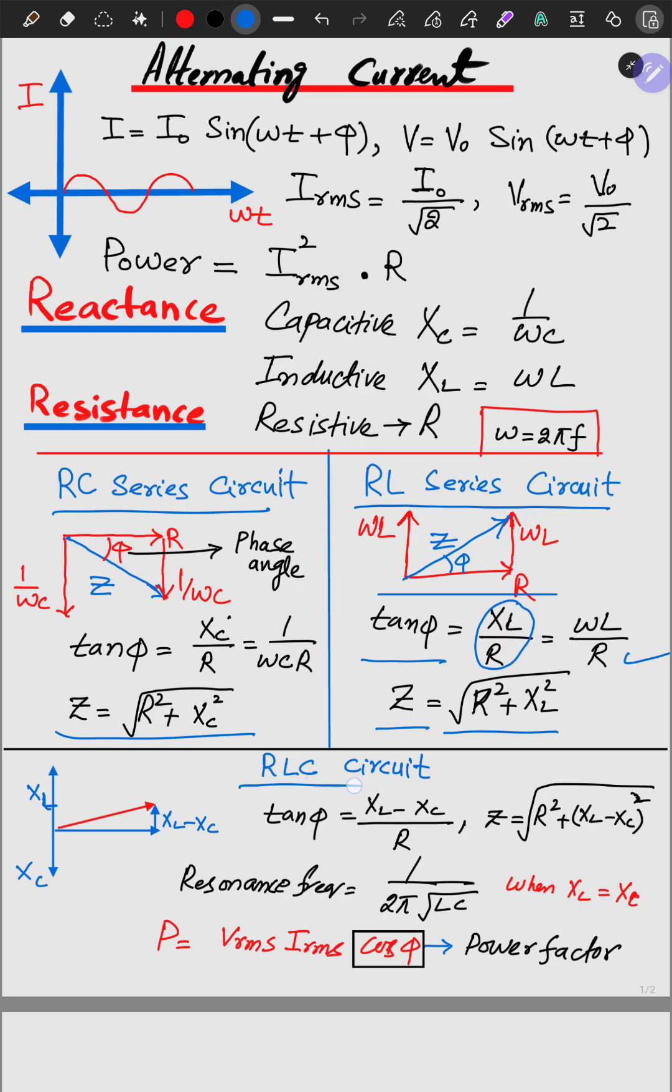In the case of RLC series circuit, this is the impedance diagram. This is the impedance Z, R, XL and XC.